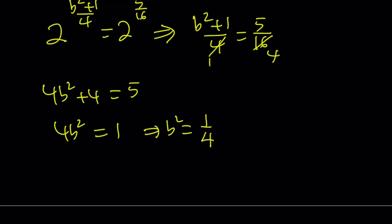And from here, we get b squared equals 1 fourth. Of course, this has two results, and we're going to check those. b is either 1 half or negative 1 half. We're going to check to make sure that these are valid exponents.